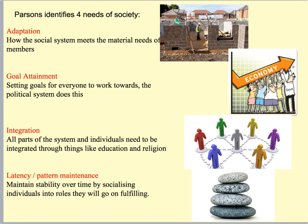Parsons talked about the four key needs of society. He said adaptation was one of them — where the social system meets the material needs of members. So make sure society provides employment, make sure the government ensures there's enough housing being built, to make sure that material needs are being met.